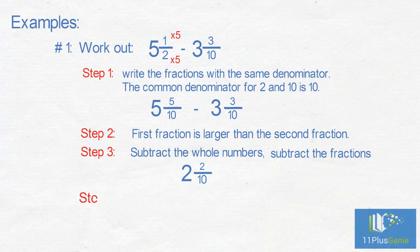Step 4: Simplify the fraction if possible. Both 2 and 10 are even numbers, so 2 can go into both of them. 2s into 2 equals 1, and 2s into 10 equals 5. 5 and a half, take away 3 and 3 tenths, equals 2 and 1 fifth.